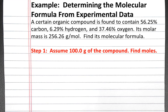I'm going to choose to use 100 grams of the compound as my sample so that it's easy to convert from percent of each element into grams of each element. So given a 100-gram sample of the compound, there will be 56.25 grams of carbon, 6.29 grams of hydrogen, and 37.46 grams of oxygen.